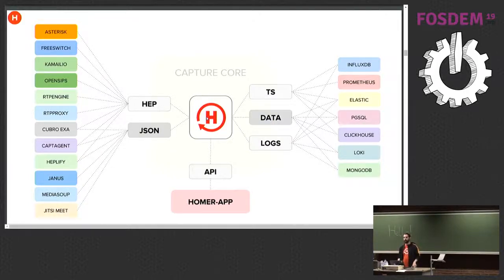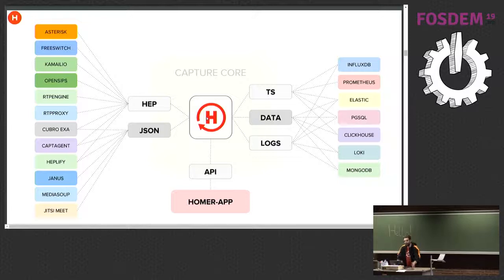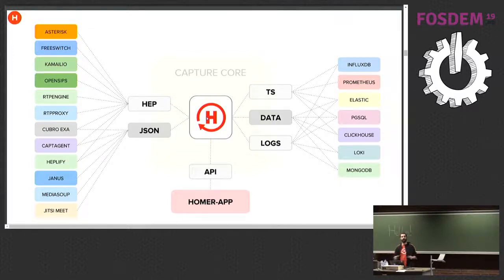Once data makes it into Homer, it gets processed, indexed, and prepared for correlation. Then it splits into three main groups. TS is for time series. Data is for whatever we index and make searchable. And logs are logs. Now they're all separate, so we have those three nice pipelines. With the same event, we can choose to store certain properties in the database for search and send other metrics to Prometheus or InfluxDB or whatever we want.